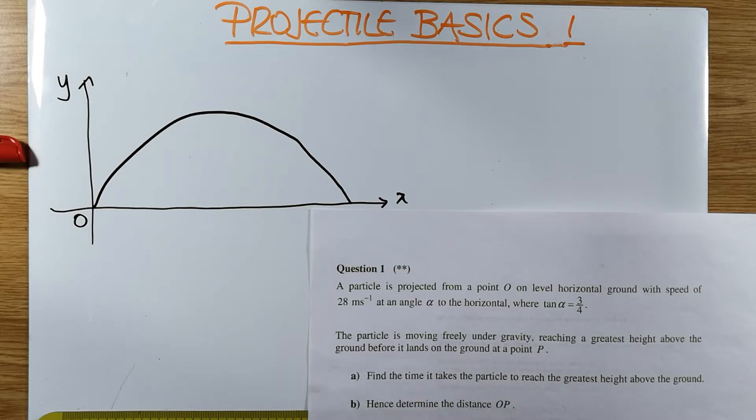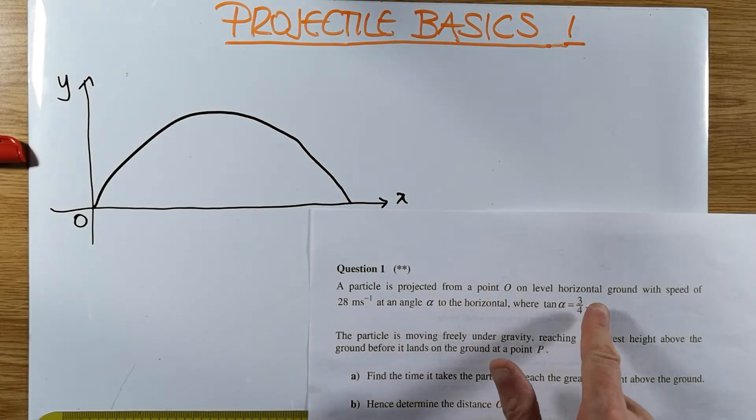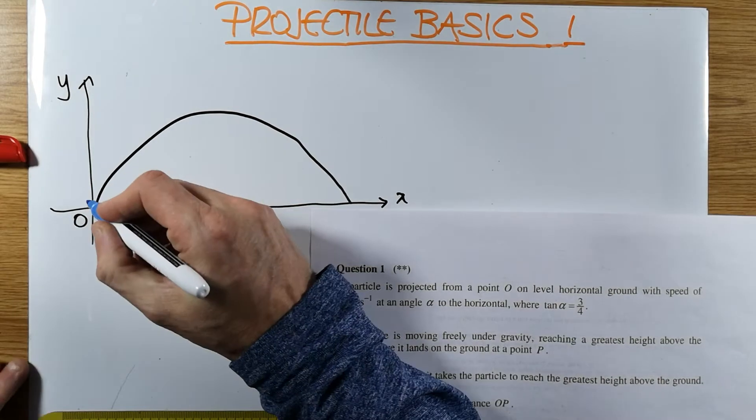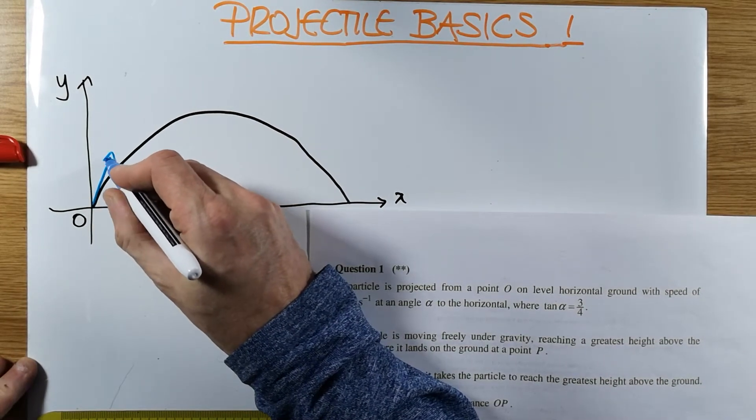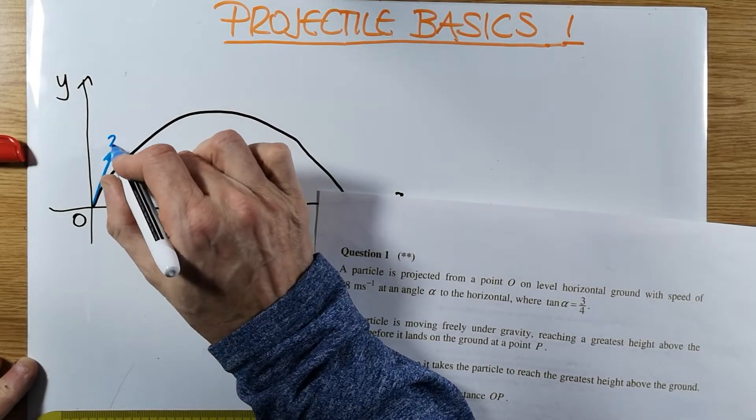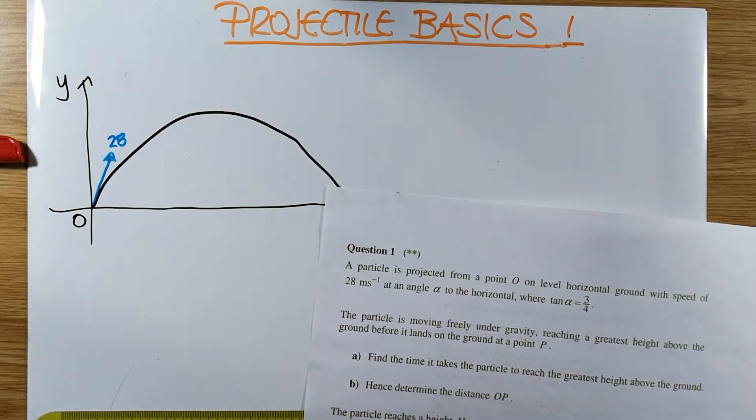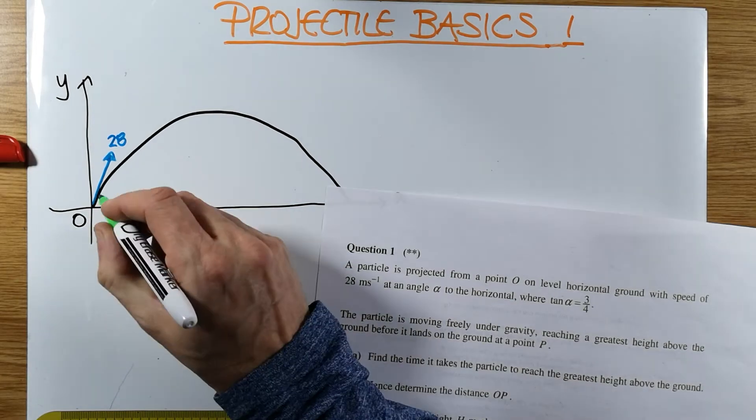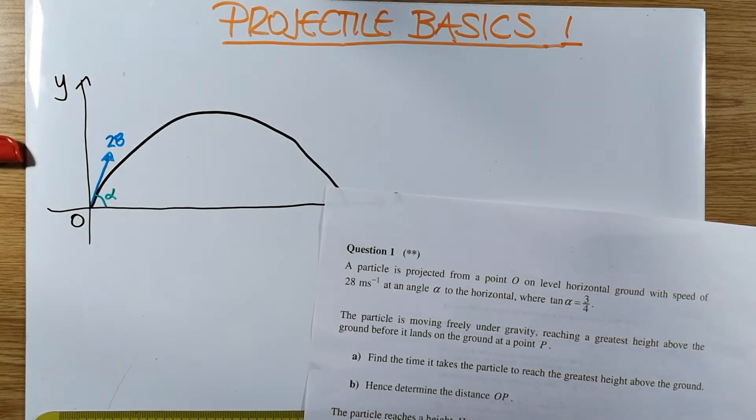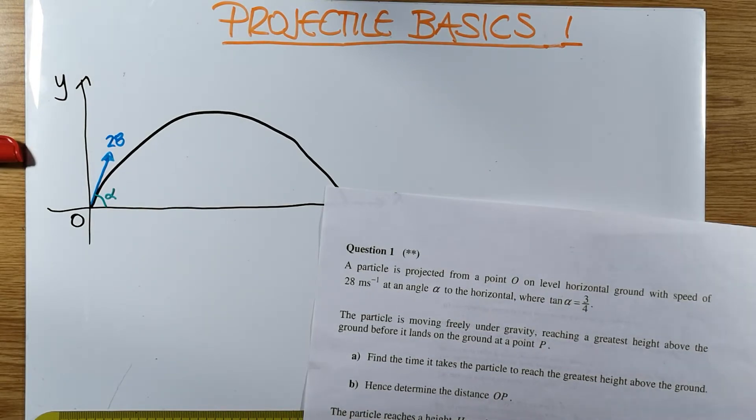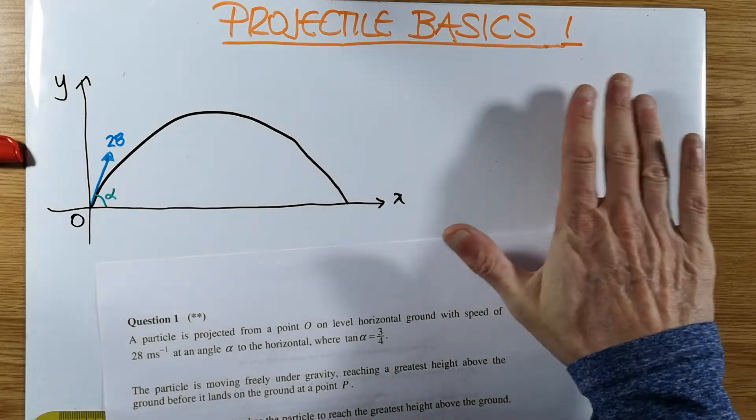Then I'm reading the question carefully and I'm putting the bits of information as I'm reading them. A particle is being projected from point O, level horizontal ground, with a speed of 28. I'm going to mark the speed in my diagram. The speed I marked as a vector which is tangential to the projection point. And I mark the units, 28, never putting the actual units, just the numbers. At an angle alpha to the horizontal. So this angle here is alpha.